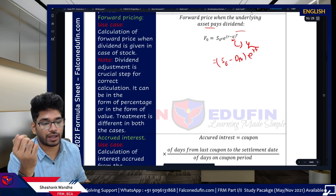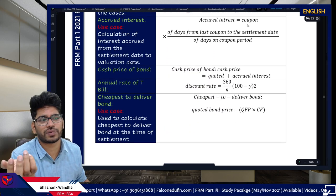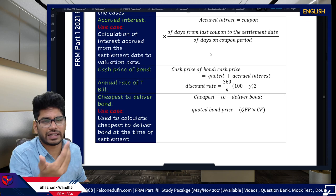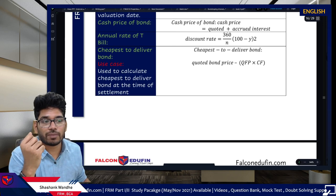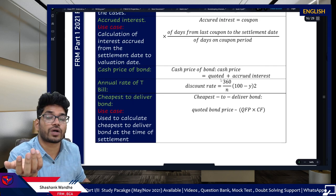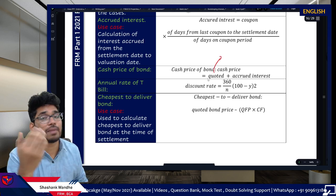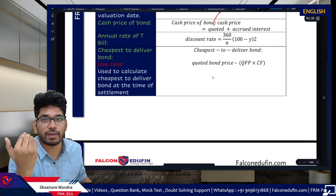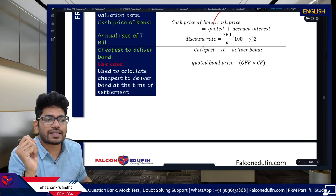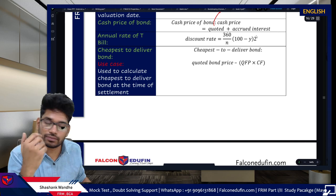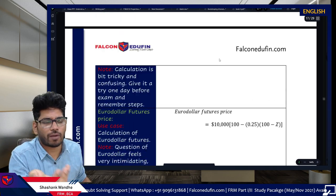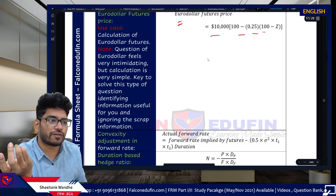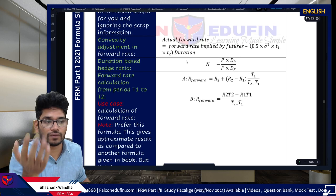Accrued interest: coupon × (days from last coupon / days in coupon period). If it's a 6-month coupon, the denominator is 180 days. Cash price = quoted price + accrued interest. The discount rate formula: (360/n) × (100 - Y) / 100. For Eurodollar futures — a very standard and important formula because everything is standardized: use 0.25 × (100 - Z) to get the answer. Cheapest-to-deliver is a concept, not a formula.